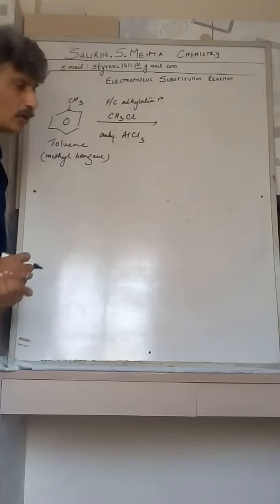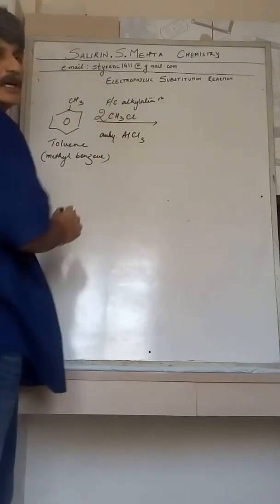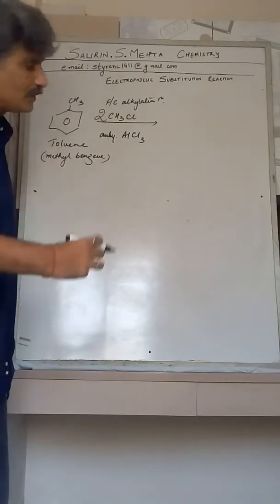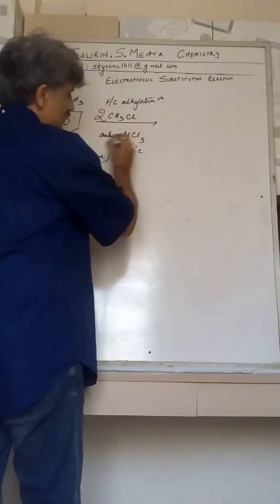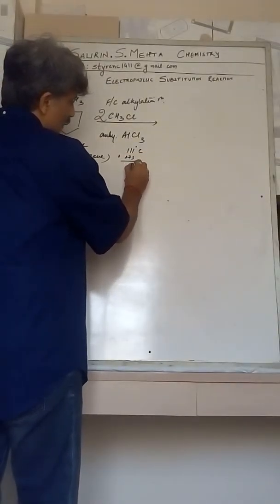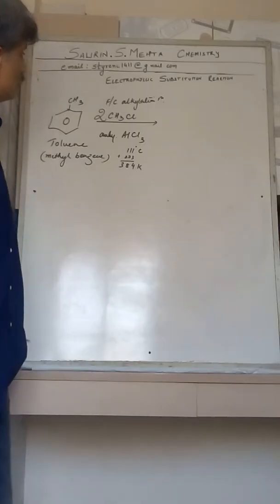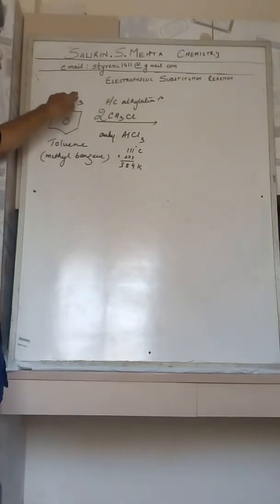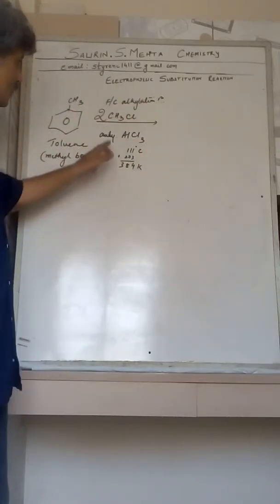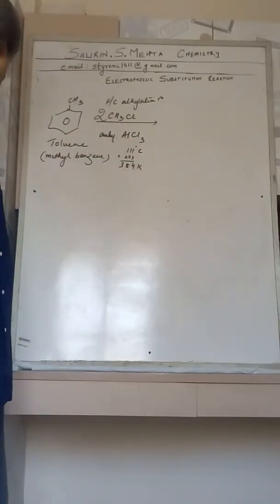Whatever the incoming group is, it will be directed by this methyl group. As it is an ortho-para directing group, it will direct the incoming group to the ortho (adjacent) and para (opposite) positions. We will take two moles of methyl chloride and react with toluene. The overall temperature maintained will be 111°C, which is 384 Kelvin.